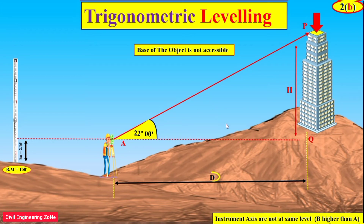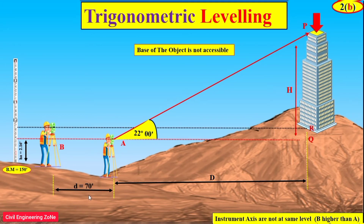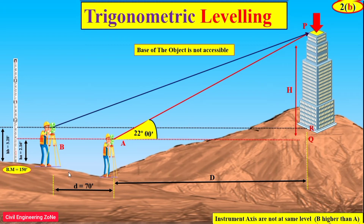When the distance is unknown, we set up the theodolite and note the staff reading on the benchmark. Then we note the angle of elevation from instrument station B to the top of the building.